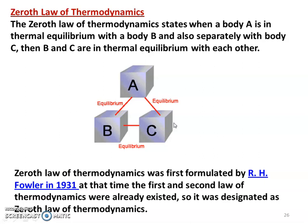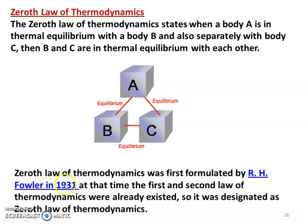The zeroth law of thermodynamics was first formulated by R. H. Fowler in the year 1931. At that time, the first and second laws of thermodynamics already existed. So it is designated as the zeroth law of thermodynamics — Fowler was the scientist who formulated and stated the zeroth law of thermodynamics.